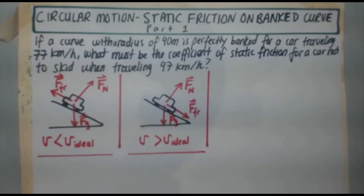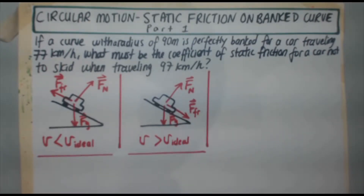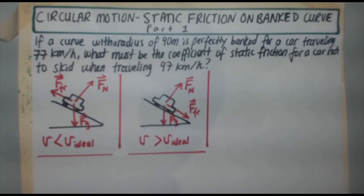Welcome back to another circular motion problem: static friction on a banked curve, part one. If a curve with a radius of 90 meters is perfectly banked for a car traveling 77 kilometers per hour, what must be the coefficient of static friction for a car not to skid when traveling 97 kilometers per hour?